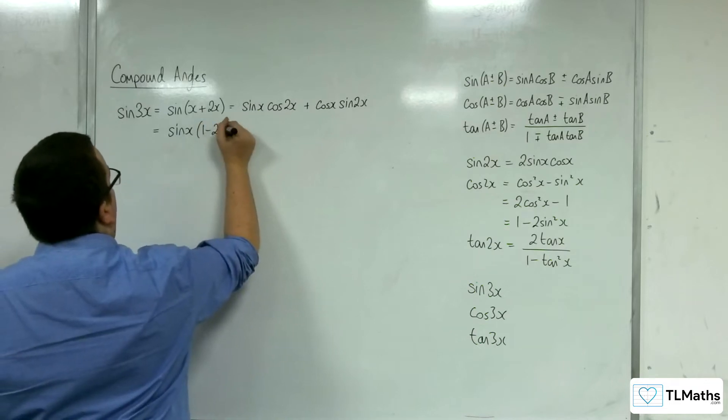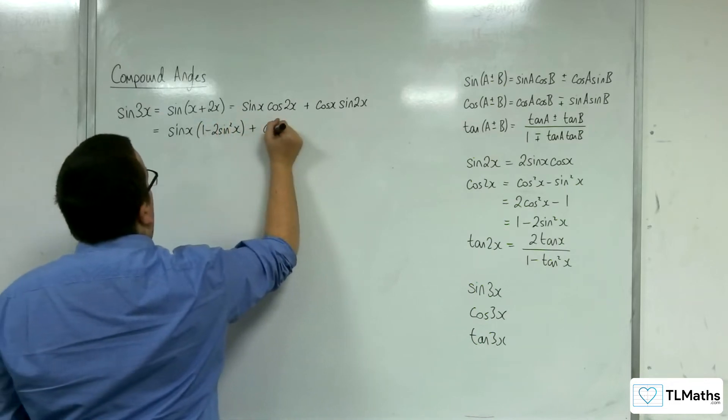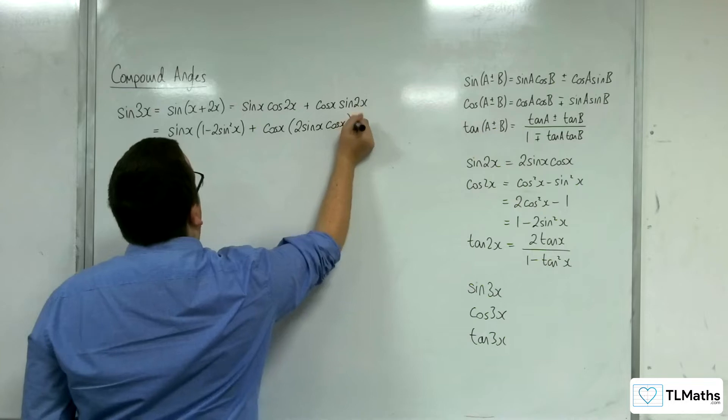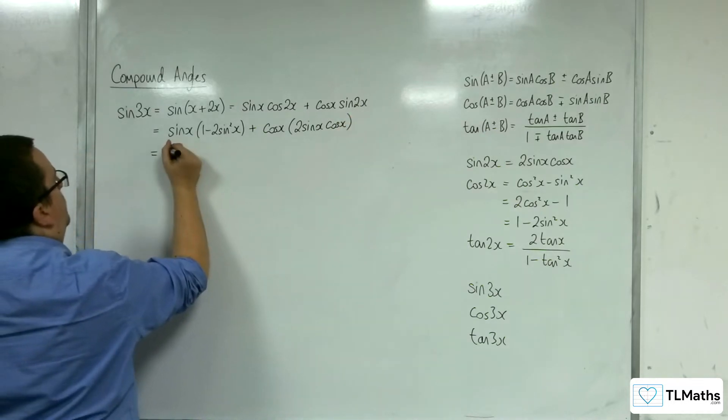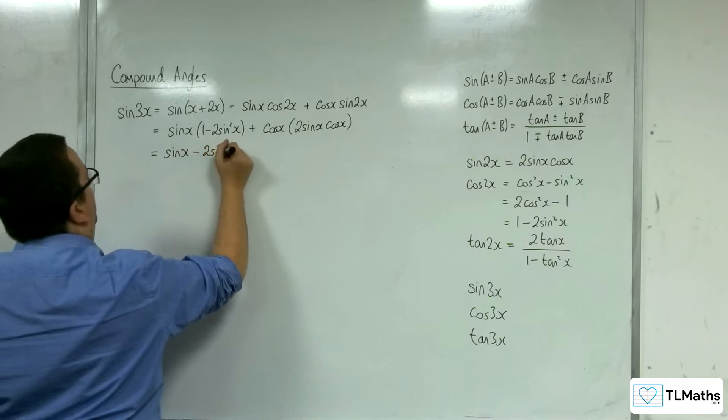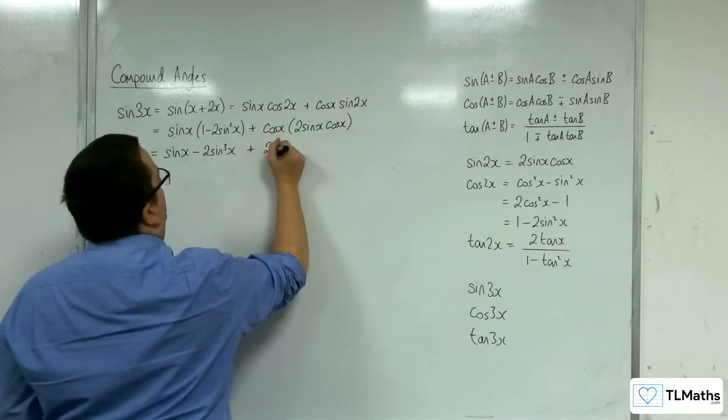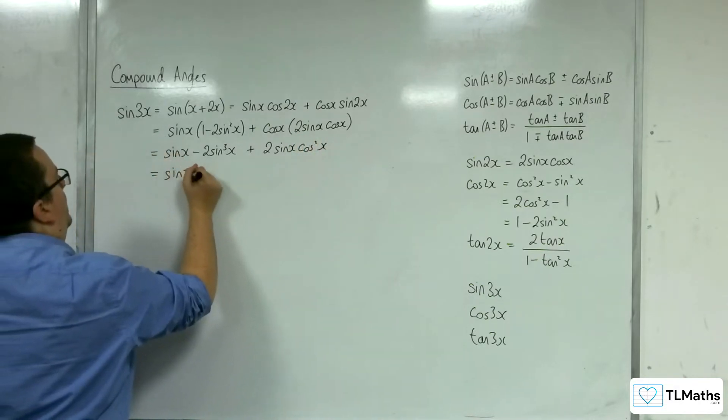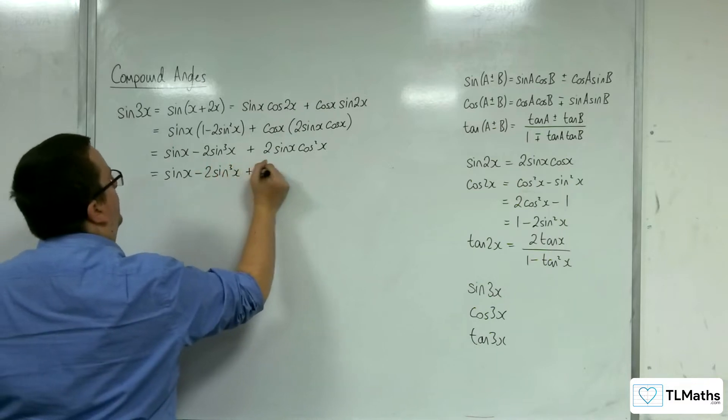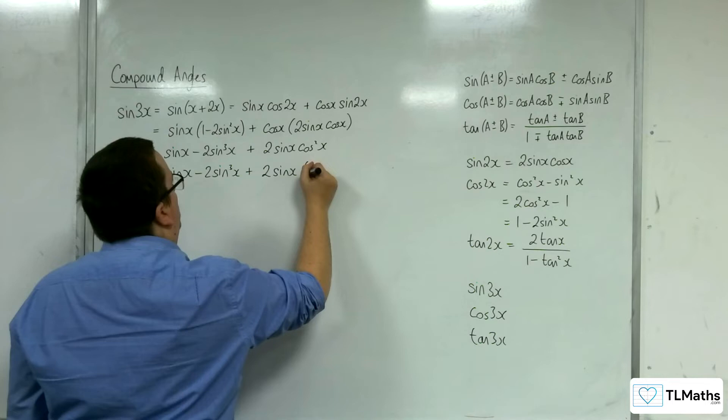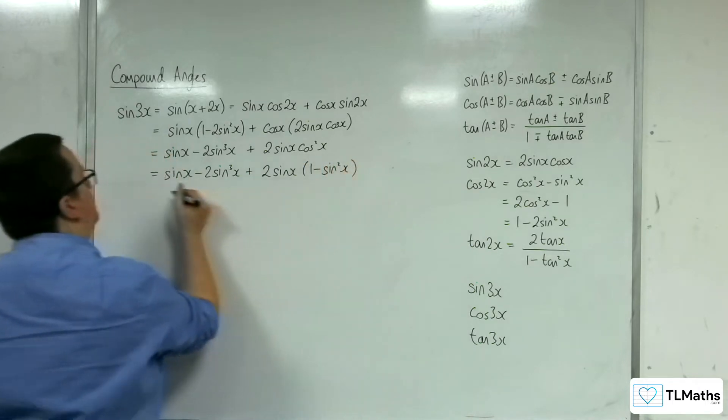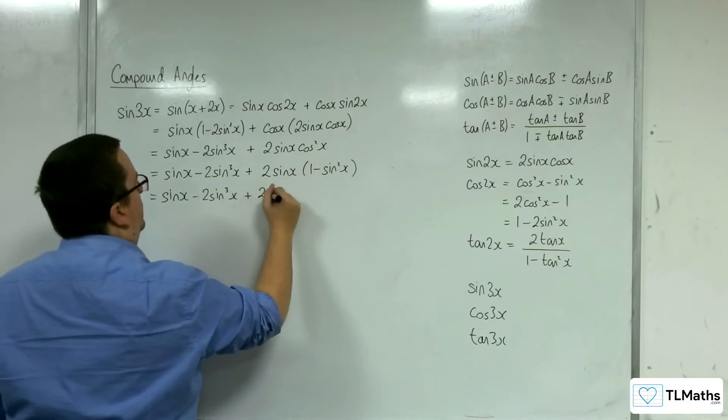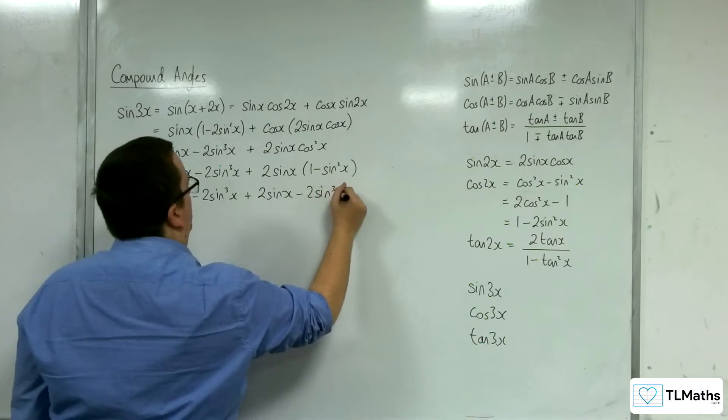And we just want things in terms of sine x. So I'll choose the 1 minus 2 sine squared as the replacement. Plus cosine x times sine of 2x, which is 2 sine x cosine x. So multiplying through, we're getting sine x take away 2 sine cubed x plus 2 sine x cosine squared x. Now, we want to get rid of the cosine squared by replacing that with 1 minus sine squared.